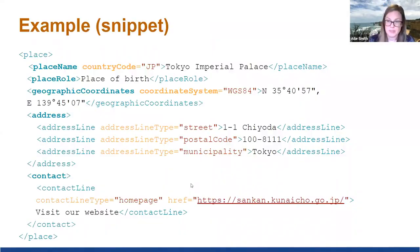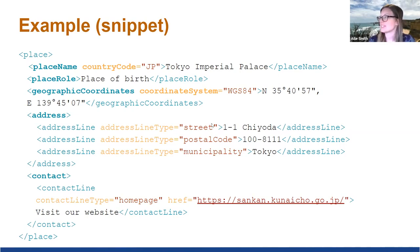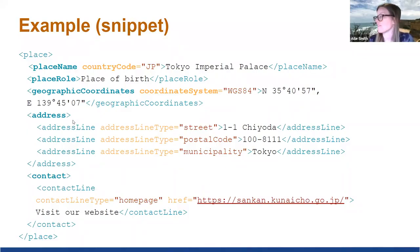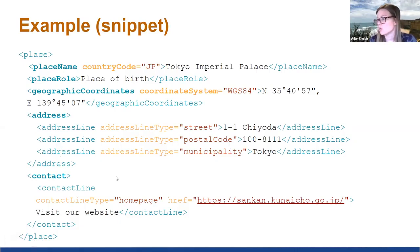In this new version of EAC-CPF, there is an additional contact element. This works much like the existing address element; however, while address encodes a physical address, contact can be used for contact details such as an email address, phone number, or digital addresses like a website. Geographic coordinates are now encoded in an element as opposed to the former way using latitude, longitude, or altitude attributes. Date information and additional descriptive information can also be included within place. In the example, we have a fairly complete record for place: the Tokyo Imperial Palace, with a role, geographic coordinates, the street address, and the new contact element providing the homepage for the Tokyo Imperial Palace.